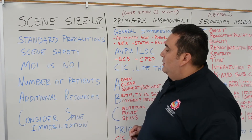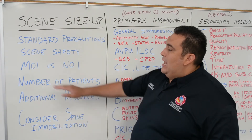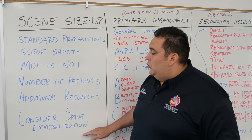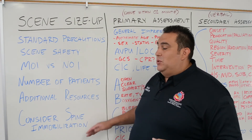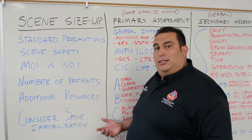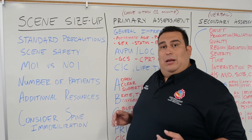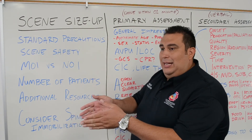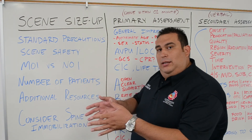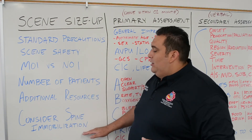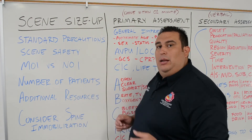Finally, with scene size-up, we're going to talk about considering spine immobilization. Now that I've looked at my mechanism of injury, do I need to consider spine immobilization? All I have to do is assume that the spine could be compromised. As long as I make that quick assumption based on the mechanism of injury, we can go ahead and consider spine immobilization. I'm going to have my partner hold the head in a neutral inline position and tell them not to let go until I can figure out what's going on. At this point we're only holding the head — we are not applying any C-collar, not applying any backboards, not applying any other devices, just holding the head in a neutral inline position manually.